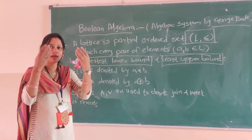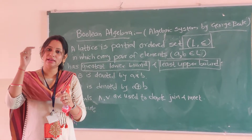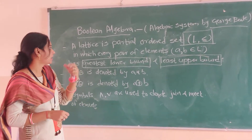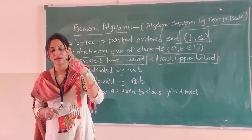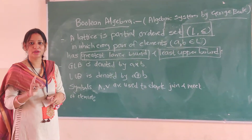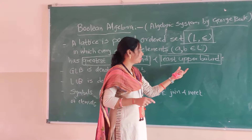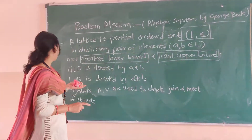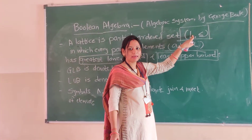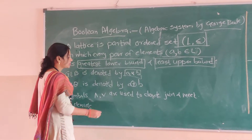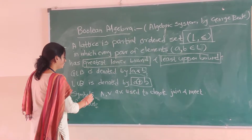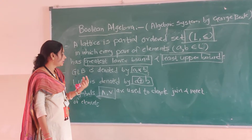Greatest lower bound means that in a particular representation, whenever elements are connected at the lowest level, that is called the greatest lower bound of that partial order set. Least upper bound means where elements are connected at the upper level. Greatest lower bound is denoted by GLB and least upper bound is denoted by LUB. GLB is denoted as A into B, and LUB is denoted by A join B, for A and B belonging to the lattice.